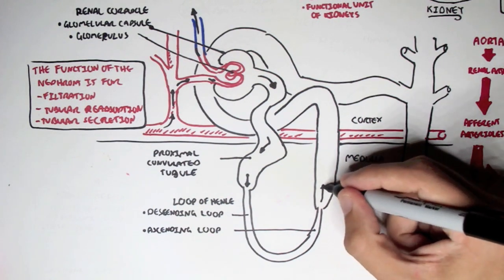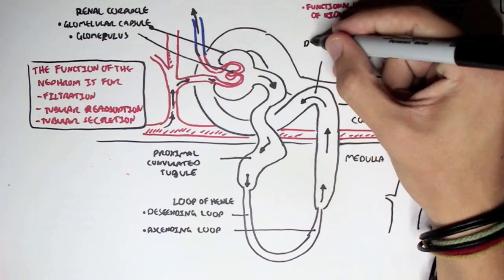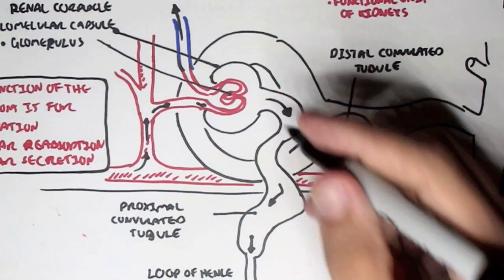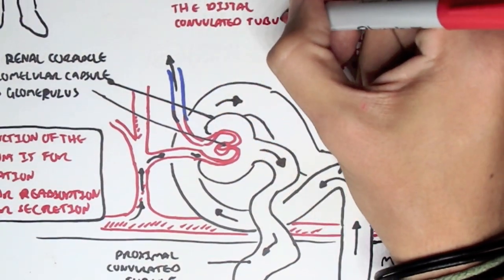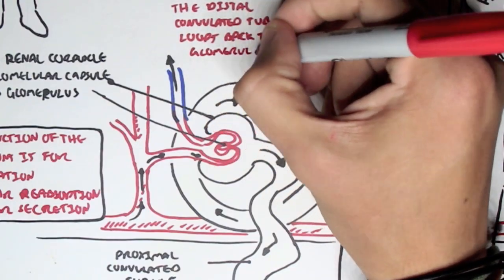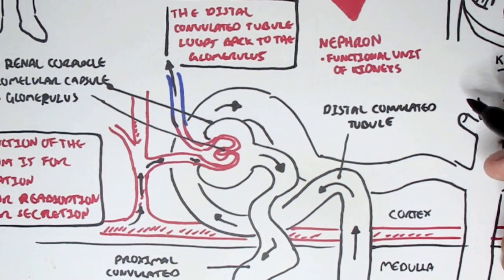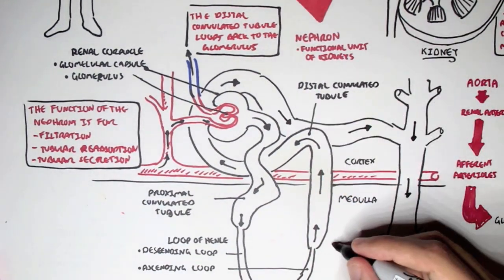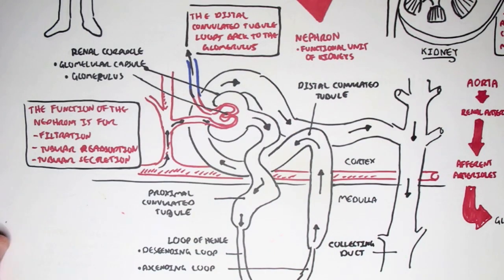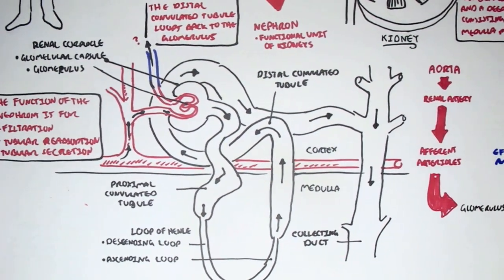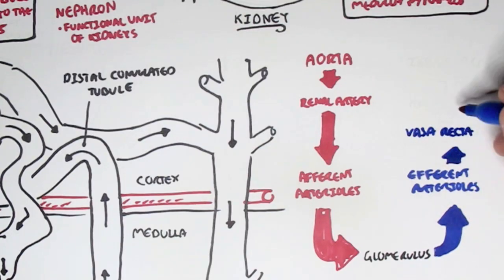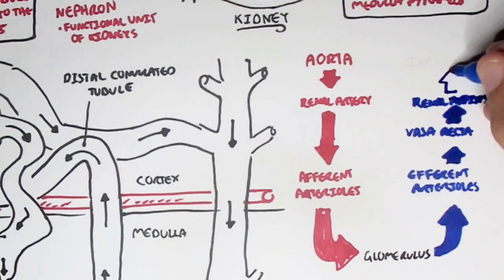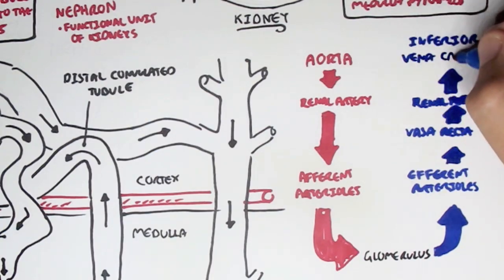The ascending loop of Henle will then form the distal convoluted tubules, where the blood will still be travelling. The distal convoluted tubule actually has to loop back to where the glomerulus was - the renal corpuscle - and we'll see the reason for this later on. The distal convoluted tubule will then connect to this vertical long tube known as the collecting duct, which will then connect to the ureter, which will then expel the urine out of the kidneys and out of the body. Back to this diagram - the efferent arterioles brings blood back out of the head of the nephron, and it can then form the vasa recta or the renal vein, which will then form the inferior vena cava.